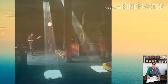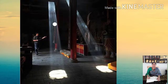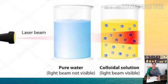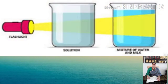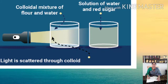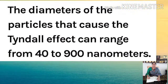The path of a beam of light passing through a true solution is not visible because the particles of true solutions are very small compared to the wavelength of light. But when this light passes through a colloidal solution, the light is scattered and becomes visible, because the diameter of the particles that cause the Tyndall effect should be in the range from 40 to 900 nanometers.